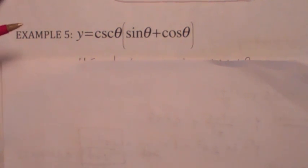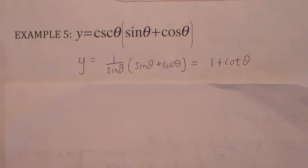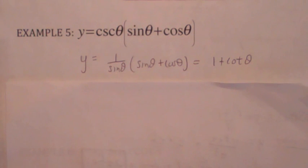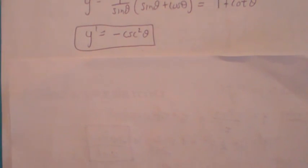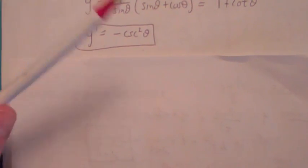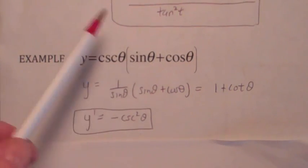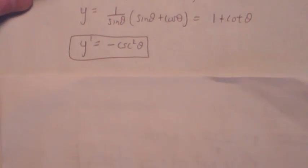There might be some sometimes, however, when you might be able to use a trig identity on these. On this first, for example, example 5, you might be able to simplify this before you use the product rule. You may not have to use the product rule. If you write cosecant as 1 over sine theta, and distribute, you get 1 plus cotangent theta, and so that might be a good idea. When you differentiate that, you get 0 minus cosecant squared theta, which is exactly what you would have gotten had you used the product rule. Try it.